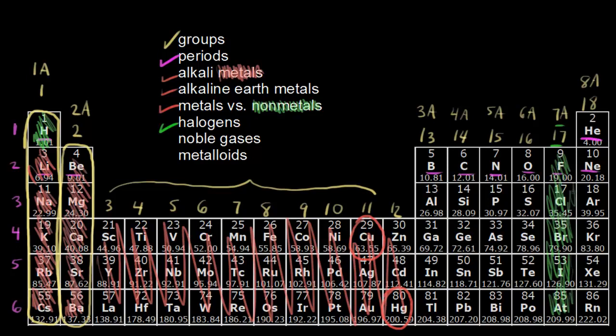So halogens are very reactive non-metals. So they're often very colorful, very corrosive. And the name halogen actually means salt former. And so we're actually going to come back to that in the next video when we look at some electron configurations and we talk about why these things are so reactive. And so those are the halogens.